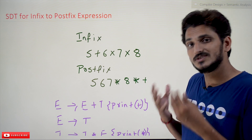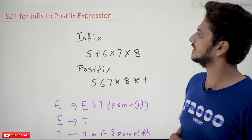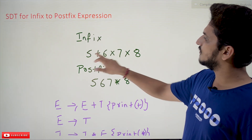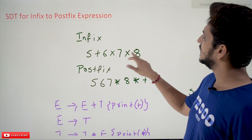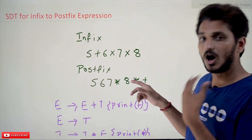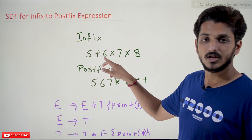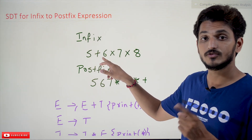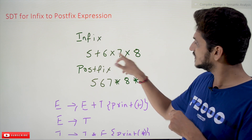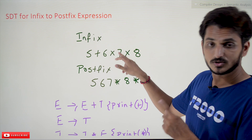Coming to today's class, it's a very simple SDT. Before going into the SDT, let's understand the need for conversion from infix expression to postfix expression. Take this infix expression: 5 plus 6 multiplied by 7 multiplied by 8. If you want to evaluate this expression, first you have to check for precedence — 6 multiplied by 7.